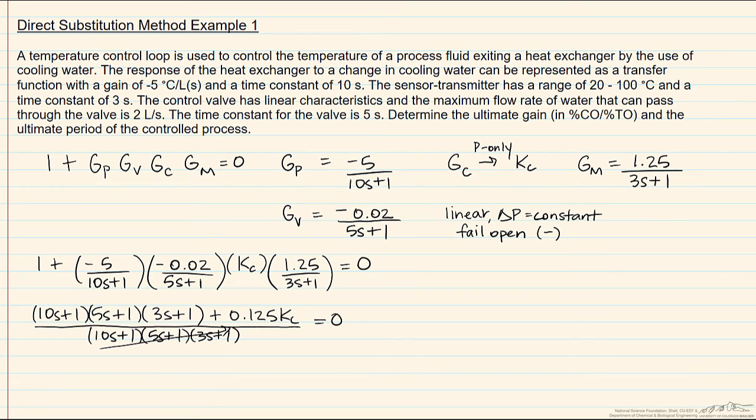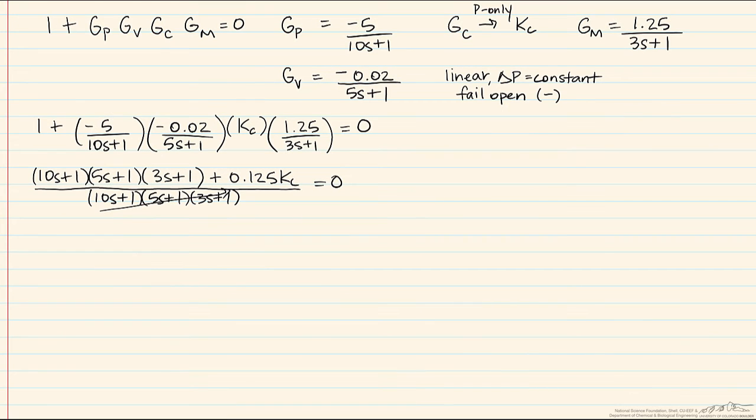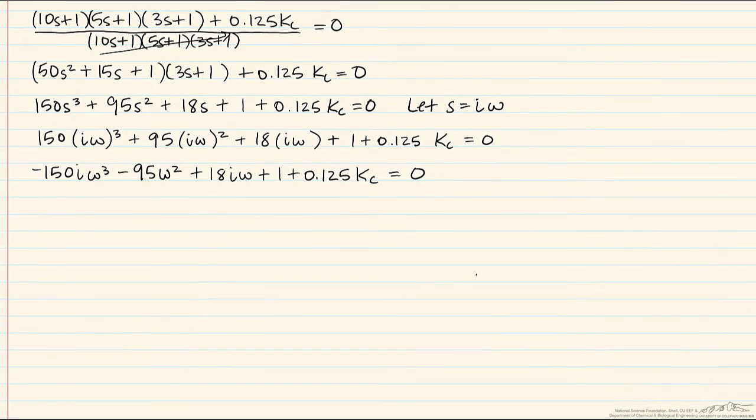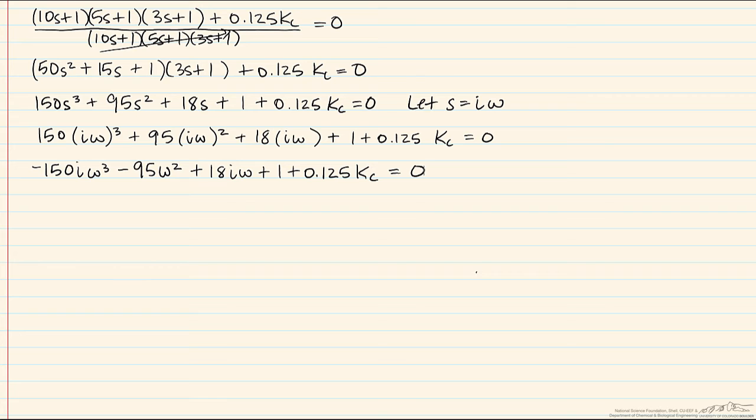We can eliminate the denominator now, and what we now have to do is factor out the first term. If we multiply this out, what we now do is let s equal i omega to evaluate this using direct substitution. We can take advantage of the fact that i squared equals negative one. We can now separate this into the real and the imaginary parts. Since the whole term is zero, that means the real part and the imaginary part must be zero.